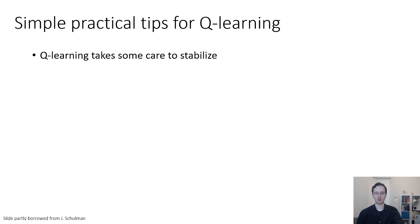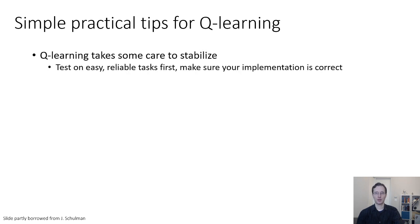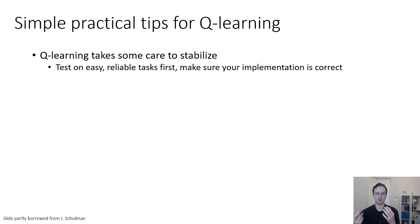It takes some care to stabilize Q-learning algorithms. I would recommend starting off by testing your algorithms on some easy, reliable problems where you know your algorithm should work, just to make sure your implementation is correct. You have to go through several different phases of troubleshooting: first make sure you have no bugs, then tune your hyperparameters, then get it to work on your real problems. Do the debugging before hyperparameter tuning on really easy problems where any correct implementation should work.